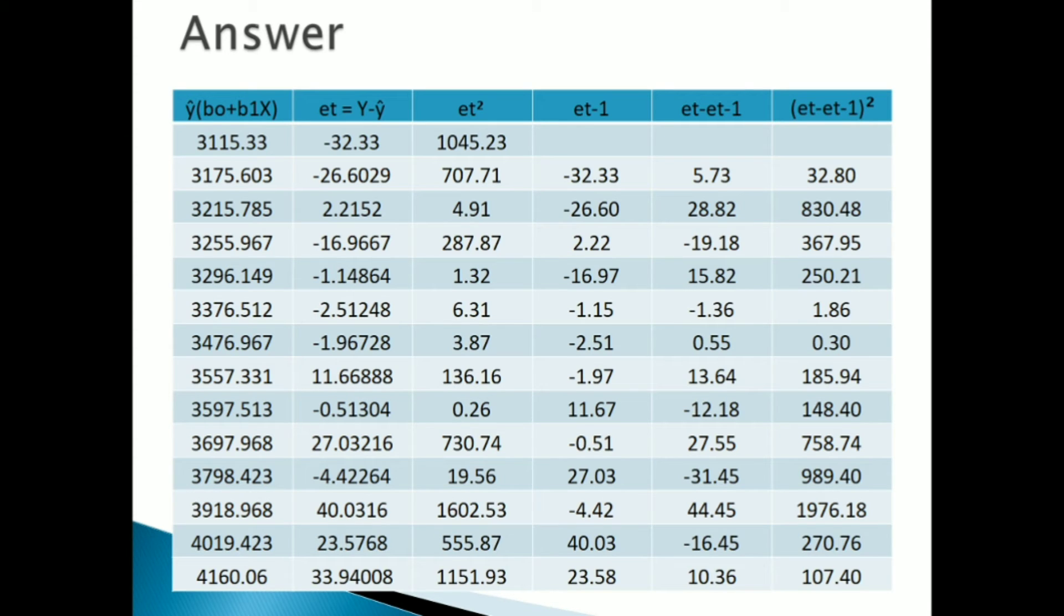Here the first column shows the Y cap. Y cap equals beta 0 plus beta 1 X. We can get the beta 0 value and beta 1 value from our regression result. You just multiply beta 1 into X. X is your advertisement. Multiply X and beta 1 and add beta 0 value to get the first column values.